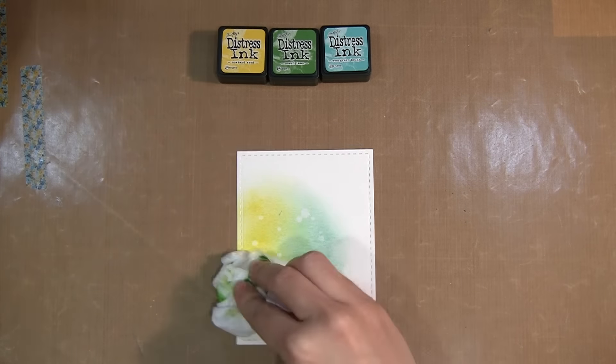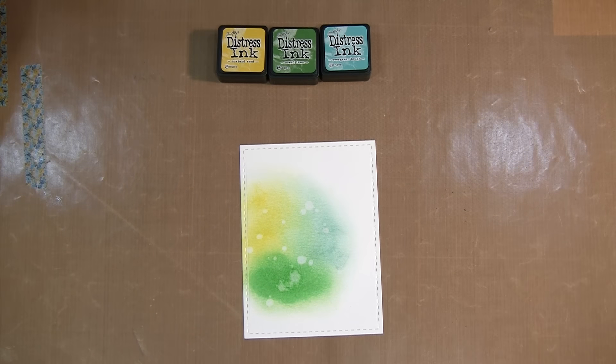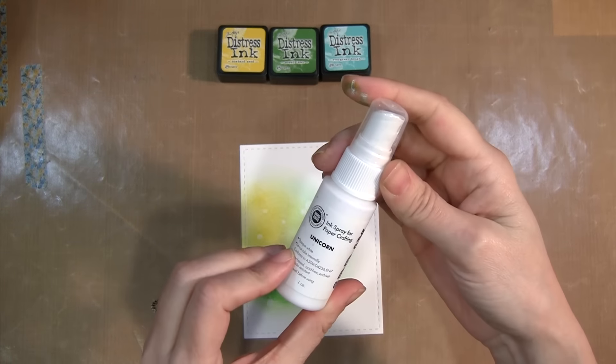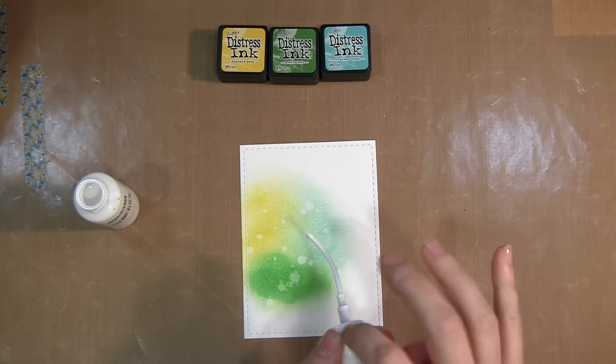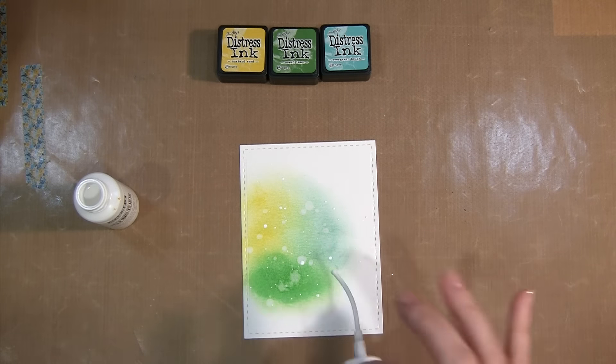While that dried, I cleaned up my area and then when I was done, I just used that baby wipe to pick up that water to remove some of that ink. And then I'm splattering on some white ink spray.